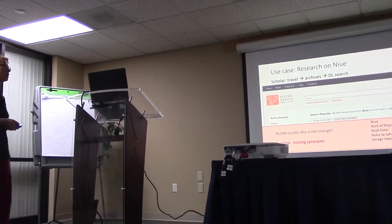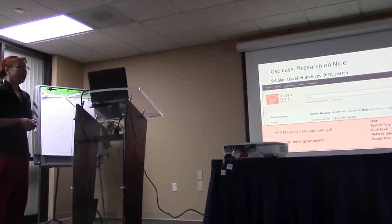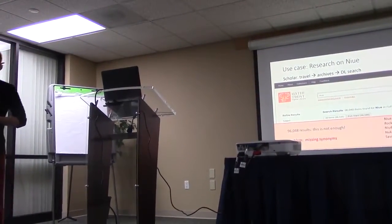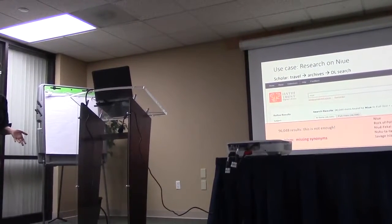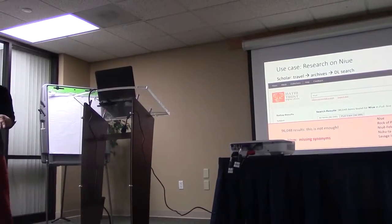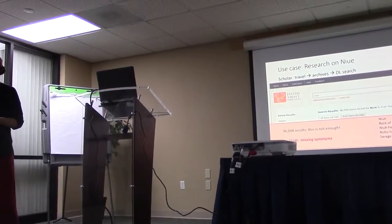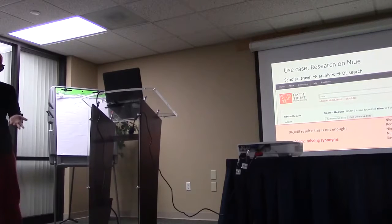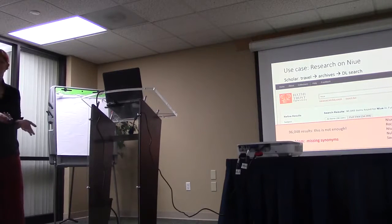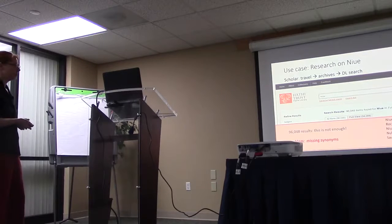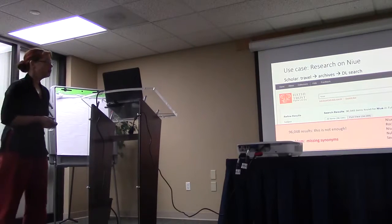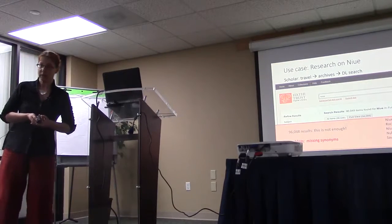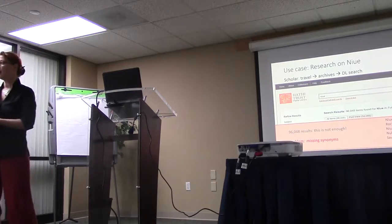Because different people live there all the time. They have their different languages. So they refer to it as Niue or as Rock of Polynesia. And then, of course, at some point, the English arrived and called it Savage Island, which, of course, people living in Niue would never do. So you need to look for all those words. And you come up with, overall, 111,000 search results that you need to check whether any of those are relevant for your research about the island in Niue.